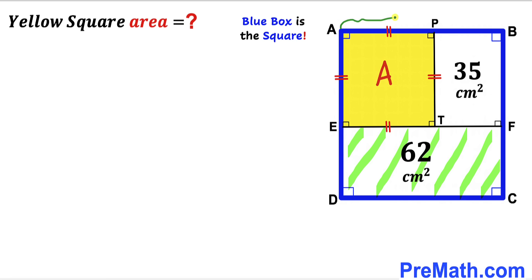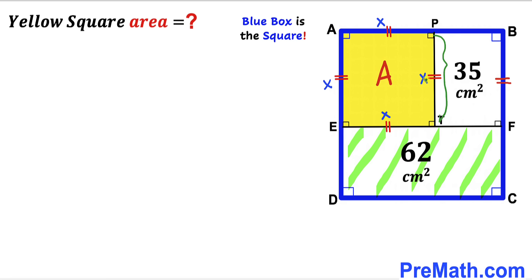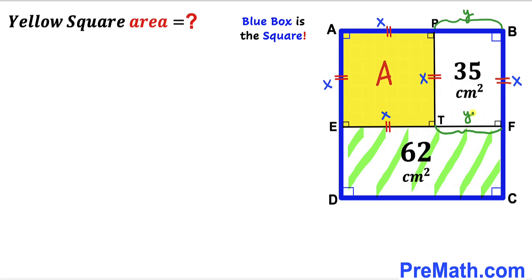I'm going to label the side length of the yellow shaded square as x, so all sides of that square are x. We can observe that side PT equals segment BF, so BF is also x. Next, segment PB equals segment BF; labeling PB as y means BF context gives us the big blue square's side length as x plus y.